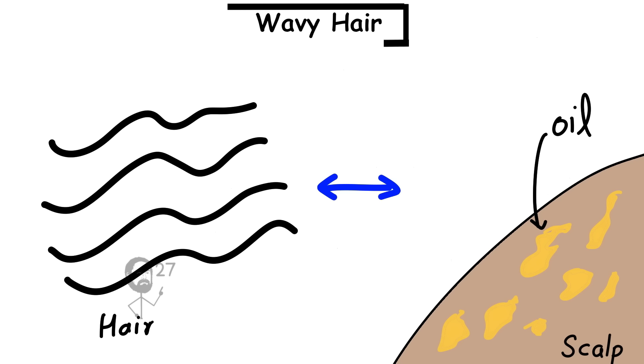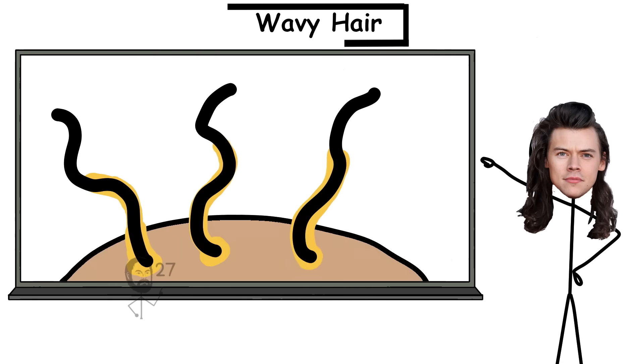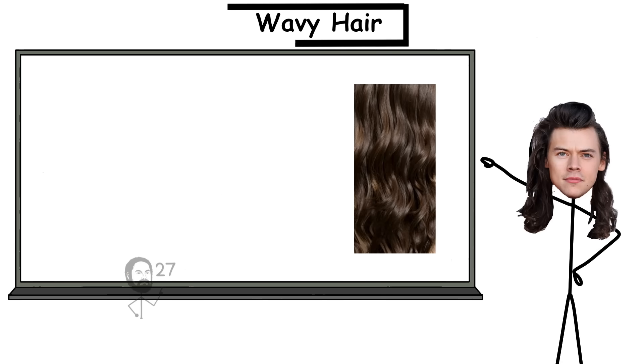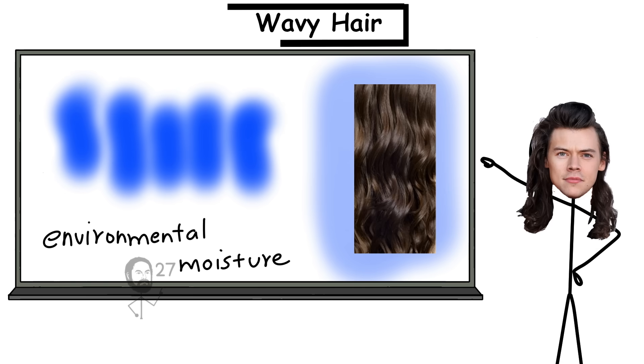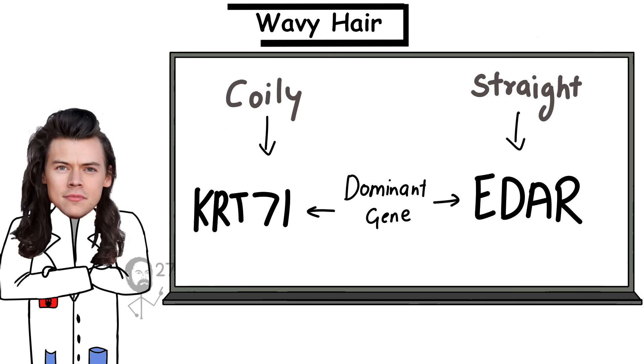The interaction between wavy hair and scalp oils is also unique. Sebum travels more slowly than in straight hair, but still makes it farther down the shaft than in curly or coily textures. This creates a pattern of partial coating, leaving the roots protected while the mid-lengths and ends remain more exposed. That uneven distribution has an unintended consequence—wavy hair tends to absorb environmental moisture more variably, which can result in subtle shifts in texture based on humidity.